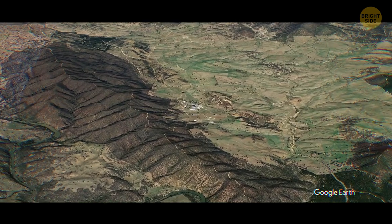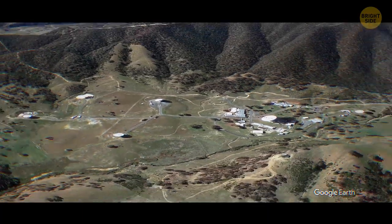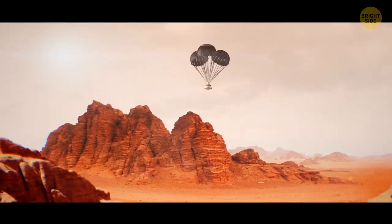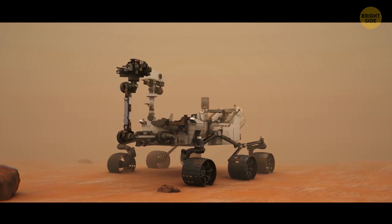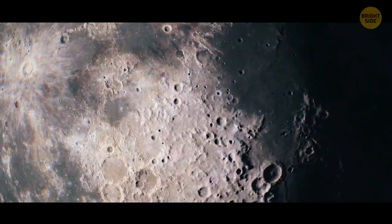The upgrade the Canberra Deep Space Communication Complex has gone through can also benefit other space missions. For example, the Mars Perseverance rover that landed on the red planet on February 18, 2021. The dish will also be crucial for exploring other planets and the moon.